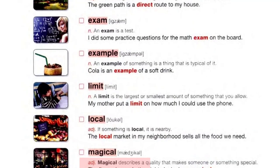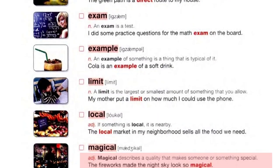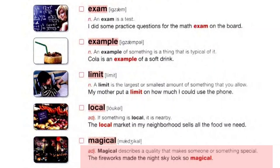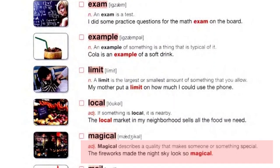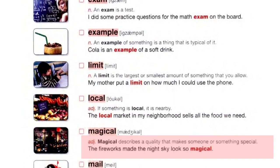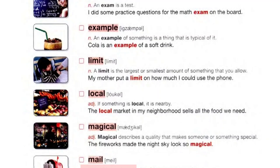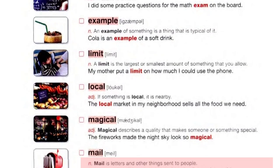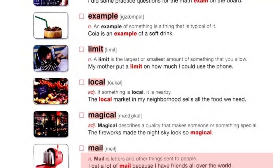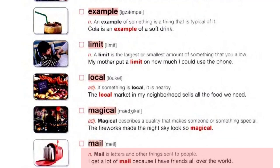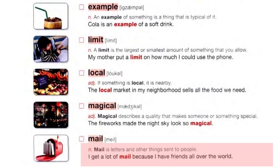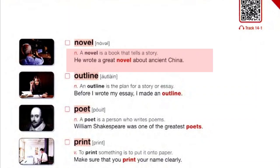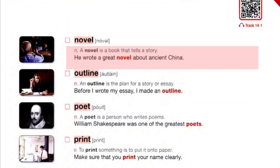Local: if something is local, it's nearby. The local market in my neighborhood sells all the food we need. Magical: magical describes a quality that makes someone or something special. The fireworks made the night sky look so magical. Mail: mail is letters and other things sent to people. I get a lot of mail because I have friends all over the world.